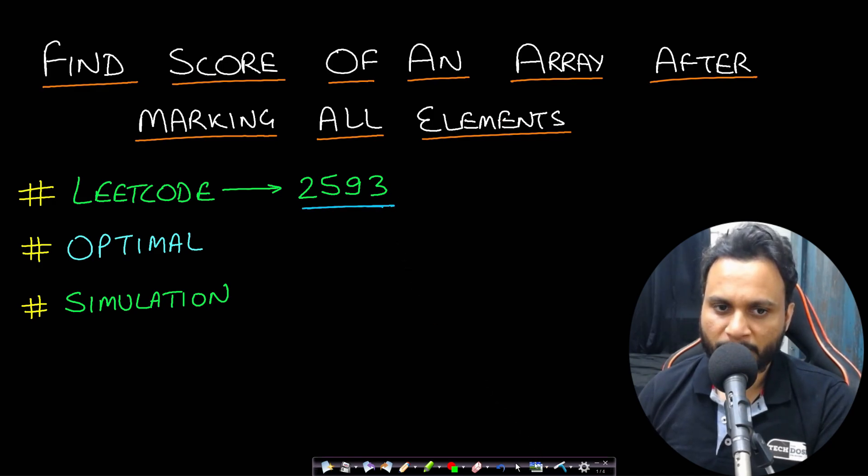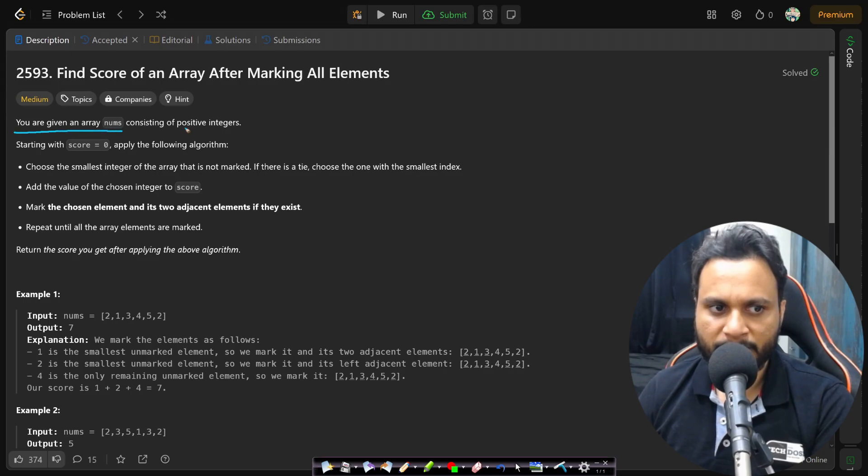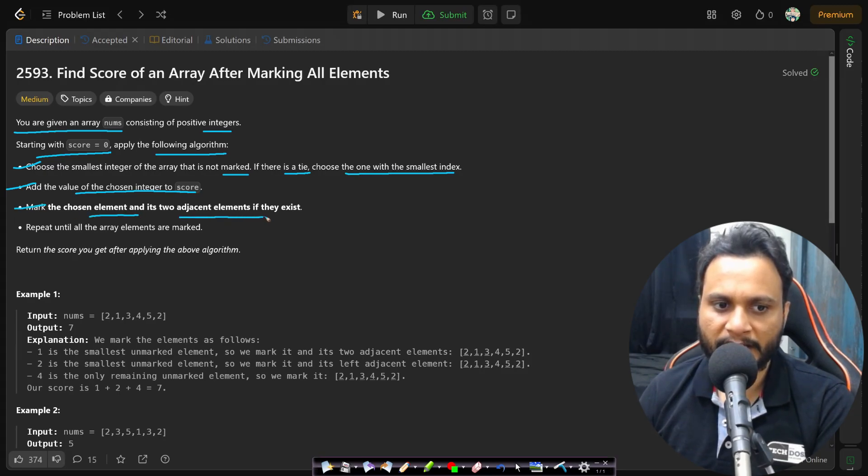Let's now read the problem statement. In this problem you are given an array nums consisting of positive integers. Starting with score 0, apply the following algorithm: Choose the smallest integer of the array that is not marked. If there is a tie, choose the one with the smallest index. Add the value of the chosen integer to the score. Mark the chosen element and its adjacent elements if they exist. Repeat until all the array elements are marked. We need to return the score you get after applying the above algorithm.